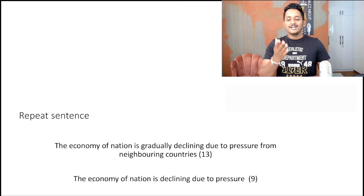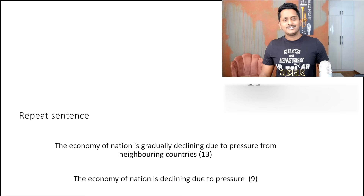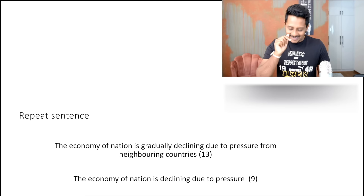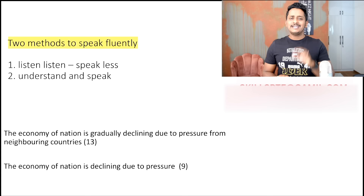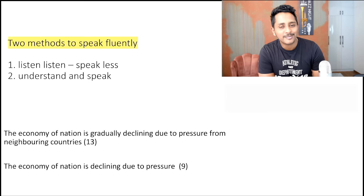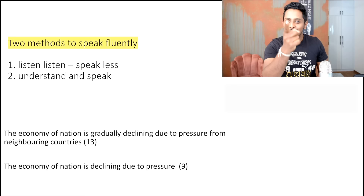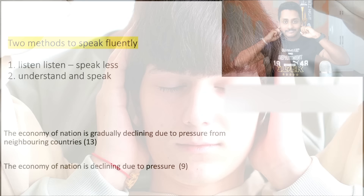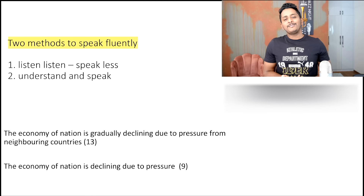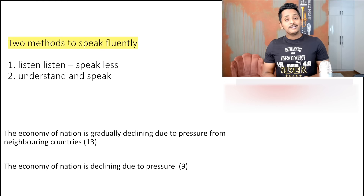Now comes the second approach: understanding how data is stored in memory. Two methods to speak fluently. First: listen less, speak less. If your capacity is 6 words, listen to 6 words. Don't be Mr. Butterball who wants to listen to all 13-14 words. Listen to 6 words and after the 6th word, close your ears. Otherwise you're going to mess it up. Speak those 6 words perfectly and you will get full marks. Simple — listen less, speak less.